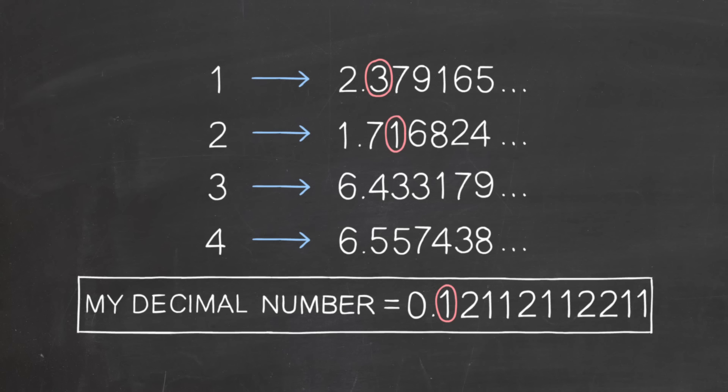For the second place of my number, I'll look at the second place of your second number. Again, if yours is a one, I'll make mine a two. Otherwise, I'll make mine a one. See how this is going?